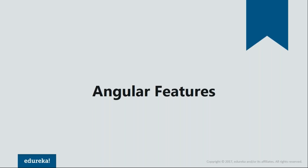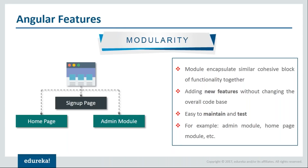Now let's have a look at some of the cool features of Angular that make it so popular around the globe. Angular apps are composed of modules. Think of modules as individual Lego blocks in a Lego toy. An Angular module allows you to group similar kinds of functionality together. For example, in a website you can have a separate module for your admin functionality and a separate module for your homepage or about page. This makes your app easy to maintain.